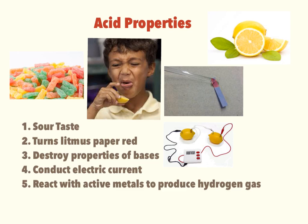Acids turn litmus paper red. This is litmus paper right here — it's a vegetable dye, and that's why it has that blue color. When you touch it with an acid, it will turn it red. That's an easy test we could do for acids. Acids also destroy the properties of bases, meaning they will react with bases to break them down and take away their basic properties.